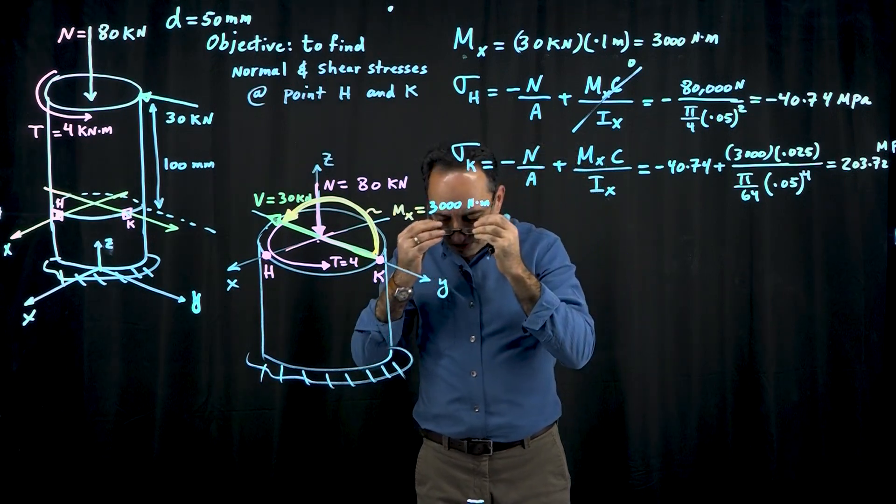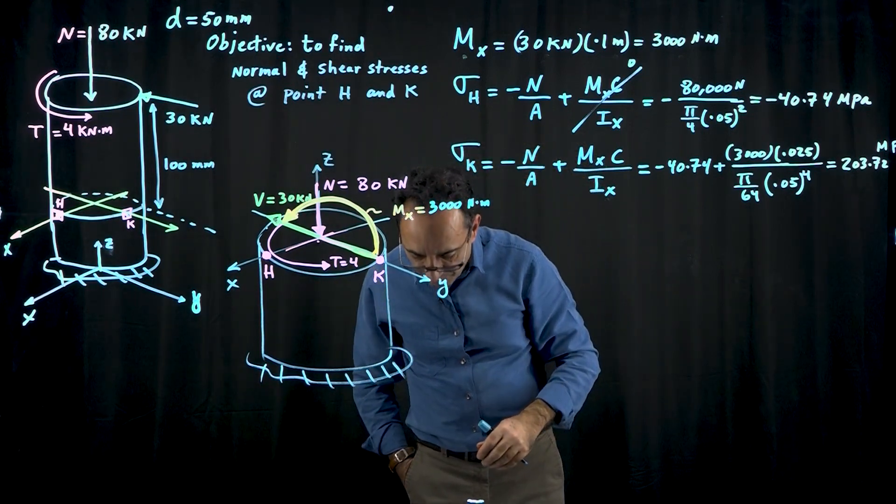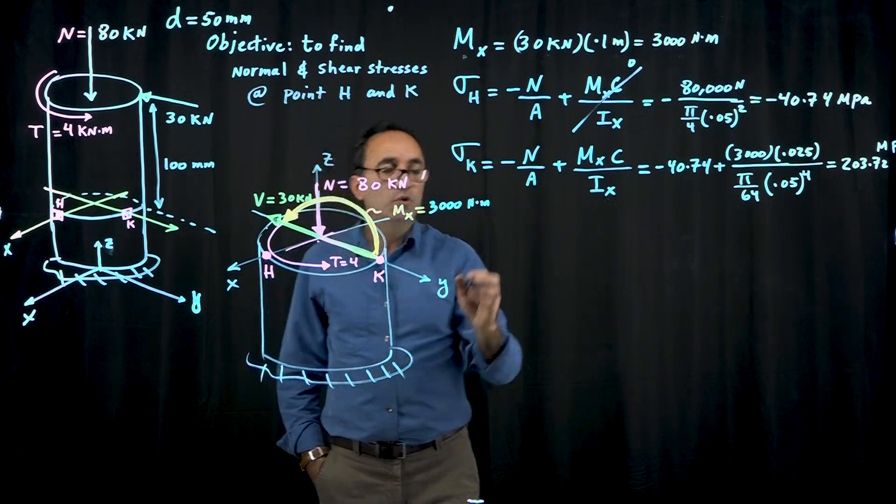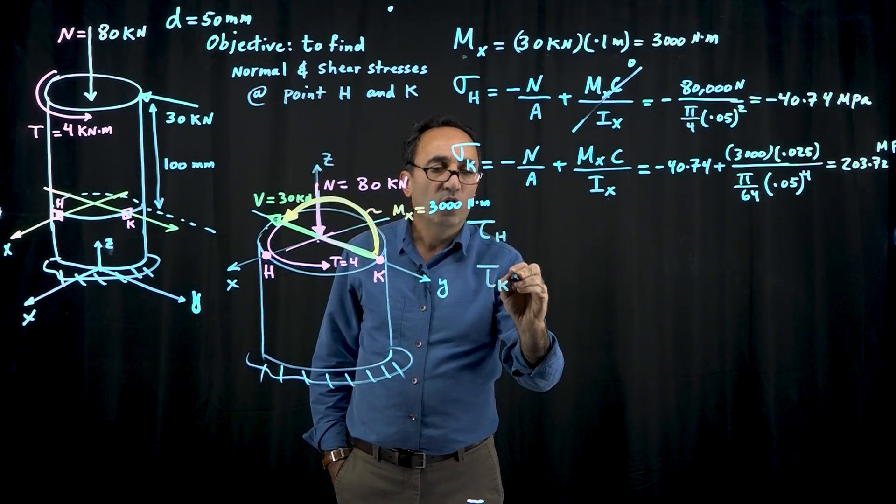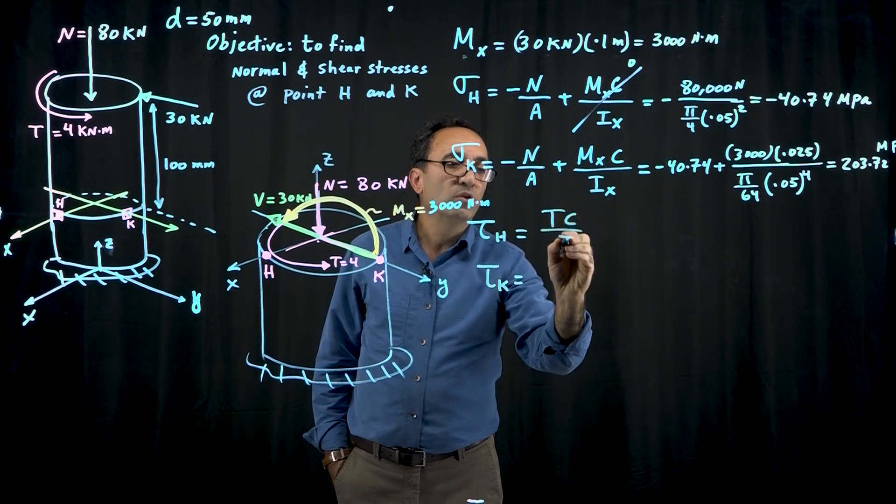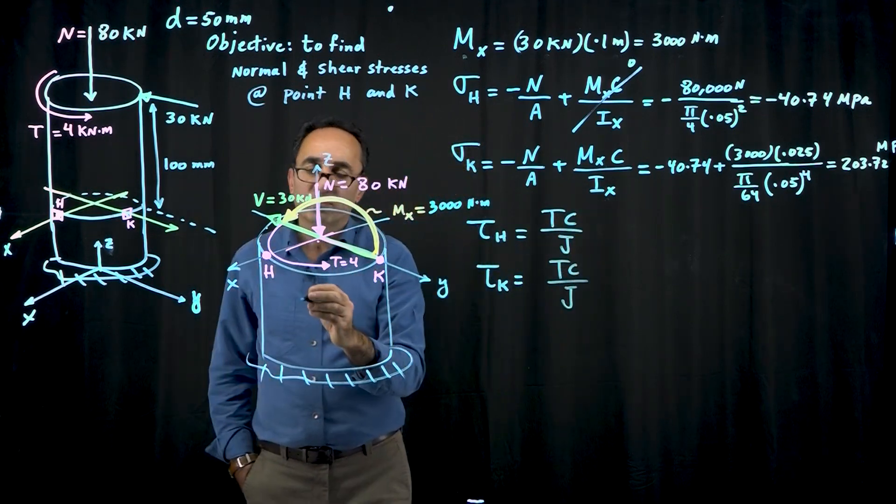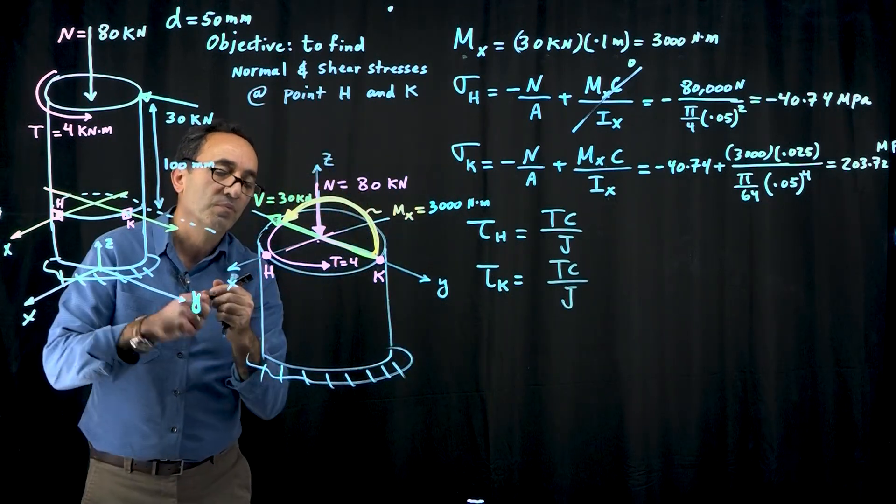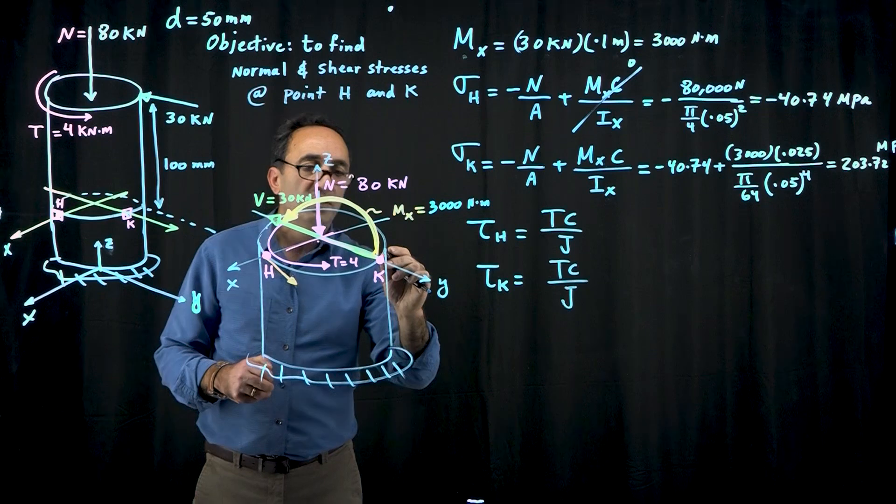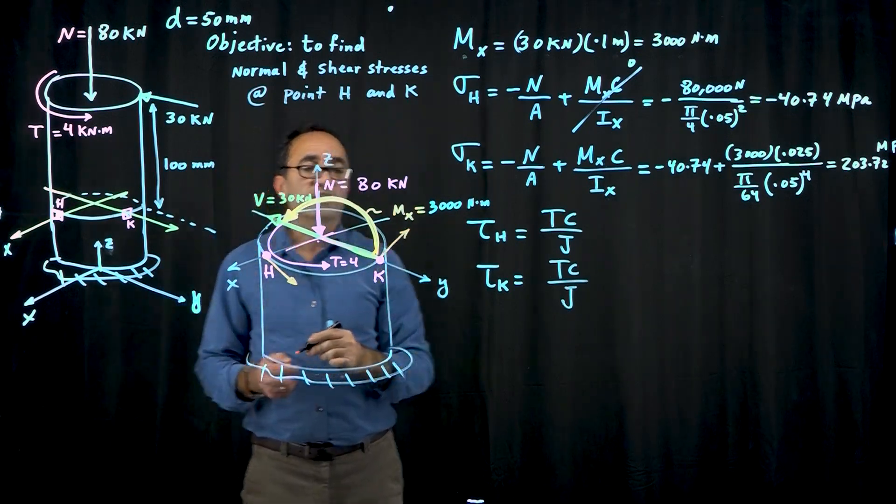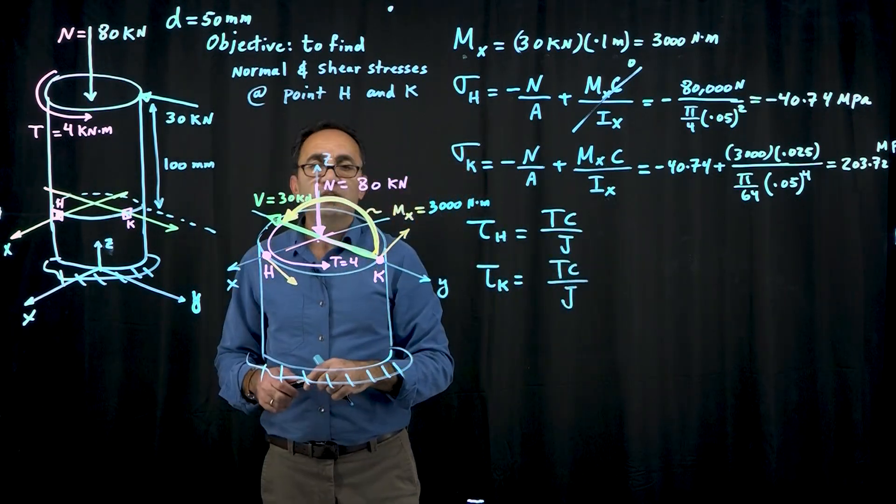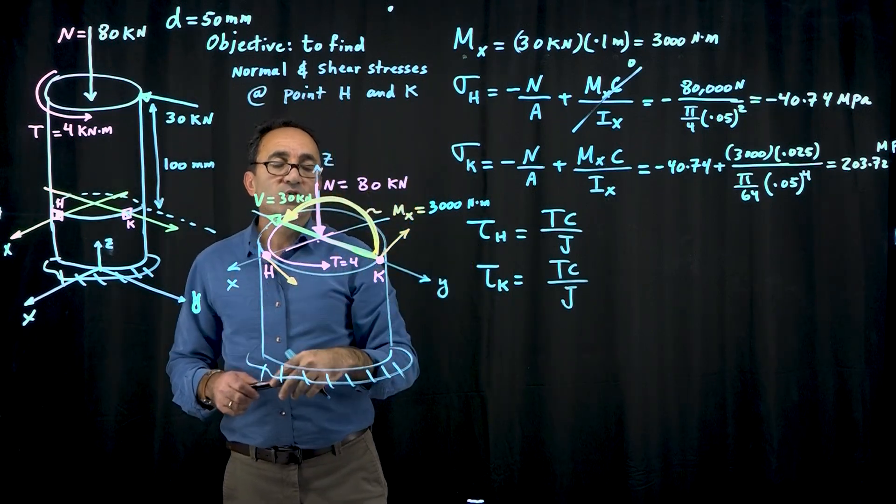Now let's calculate tau. Both points H and K are affected exactly the same way by torsional stress. Maximum torsional stress always happens on the outside. You'll see the stress at point H in this direction, and at point K the same—a shear stress from TC over J. But now we have to ask: what about the effect of the transverse shear load?